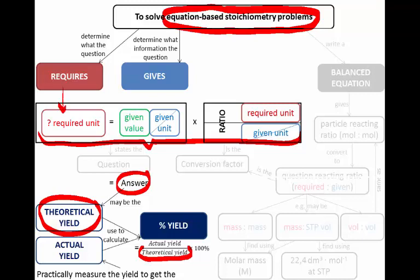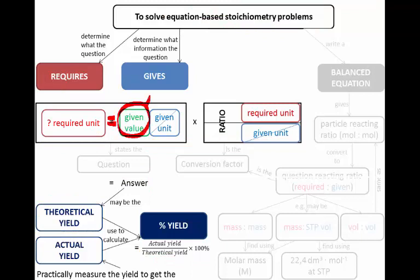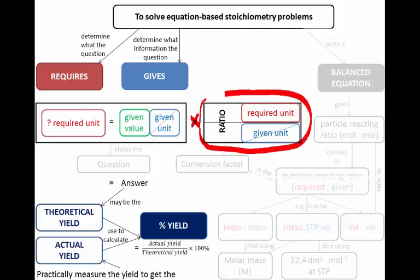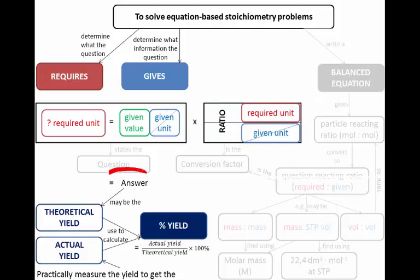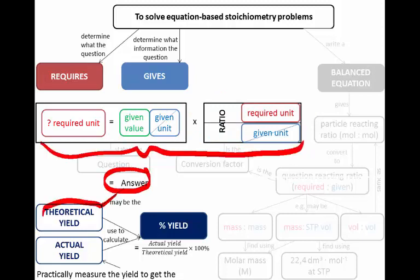We first write down what's required, with its unit, equals the given value from the question with its unit. Then we multiply that by the reacting ratio in the format that is useful for answering this — namely with the given unit at the bottom so we can cancel that away. You need a value in front of the given unit and the required unit at the top with its value to introduce the required unit. Once we have the answer to that process, we have the theoretical yield, which goes at the bottom of our equation.